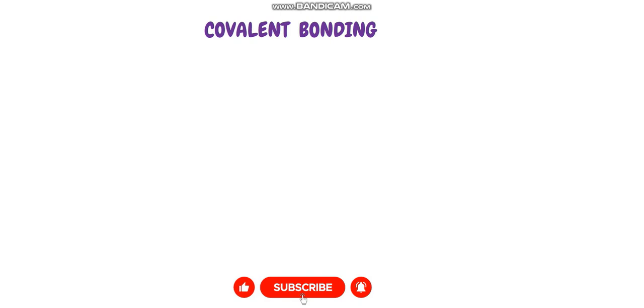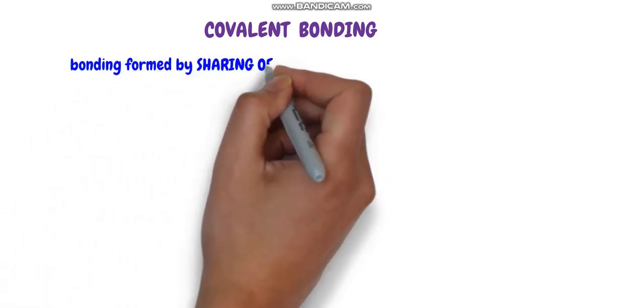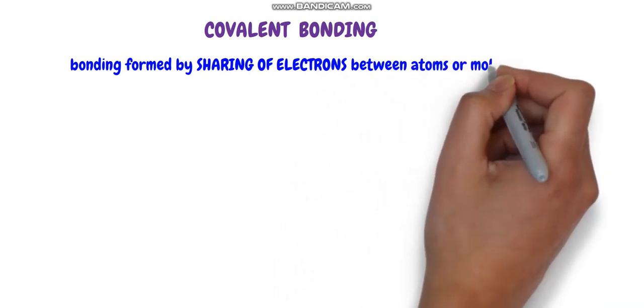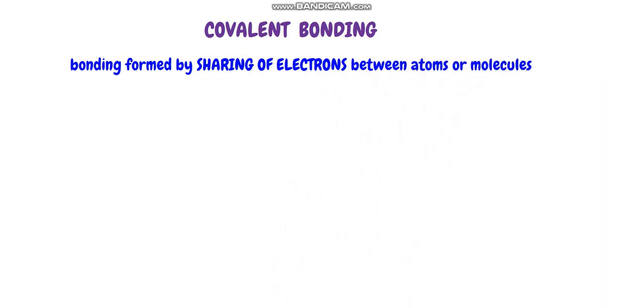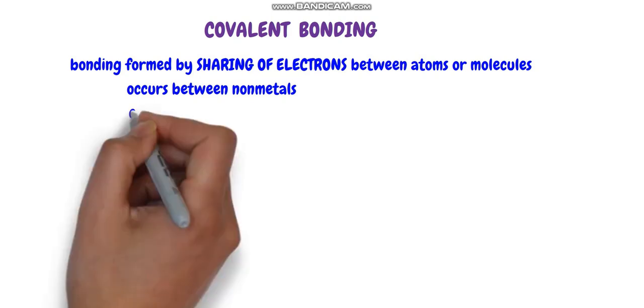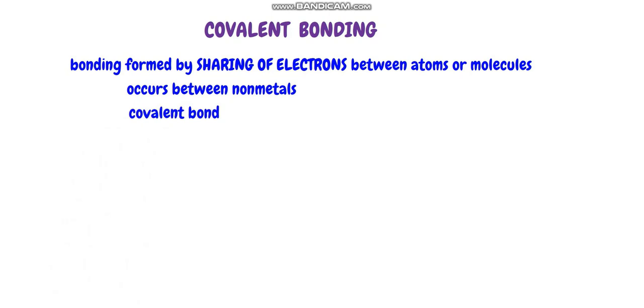Welcome students. Now we are going to see how covalent bonds form. Covalent bonds are formed by sharing of a pair of electrons — single pair, double pair, and triple pair of electrons. These bonds are formed by mutual sharing of electrons between non-metals; they may be similar elements or dissimilar elements. Now let us see covalent bond formation.